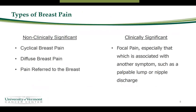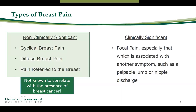When talking about breast pain, we consider two different types. The first is considered non-clinically significant: this is cyclical breast pain that changes over the course of the menstrual cycle, pain that is diffuse involving more than two quadrants of the breast, or pain that is referred to the breast from another part of the body such as the heart or the lungs. This type is considered non-clinically significant because it is not known to correlate with the presence of breast cancer.